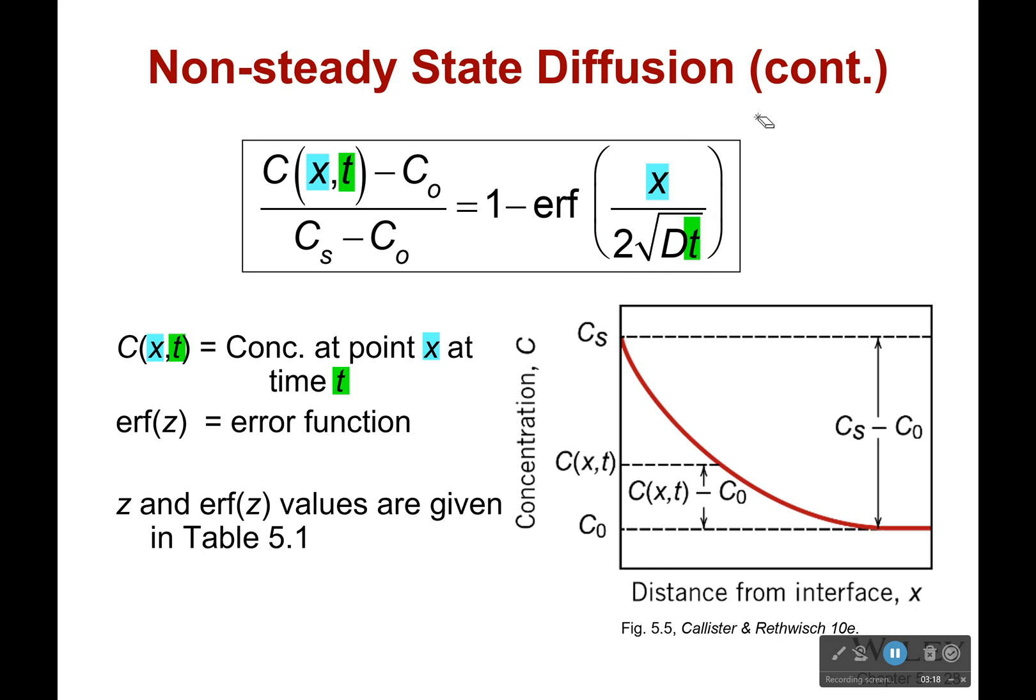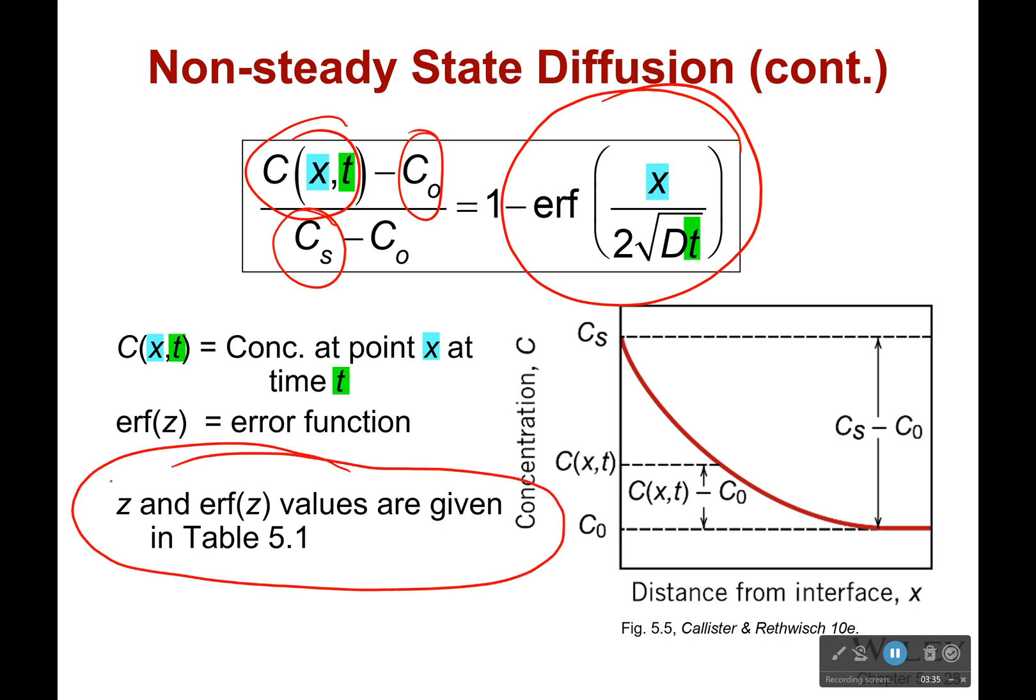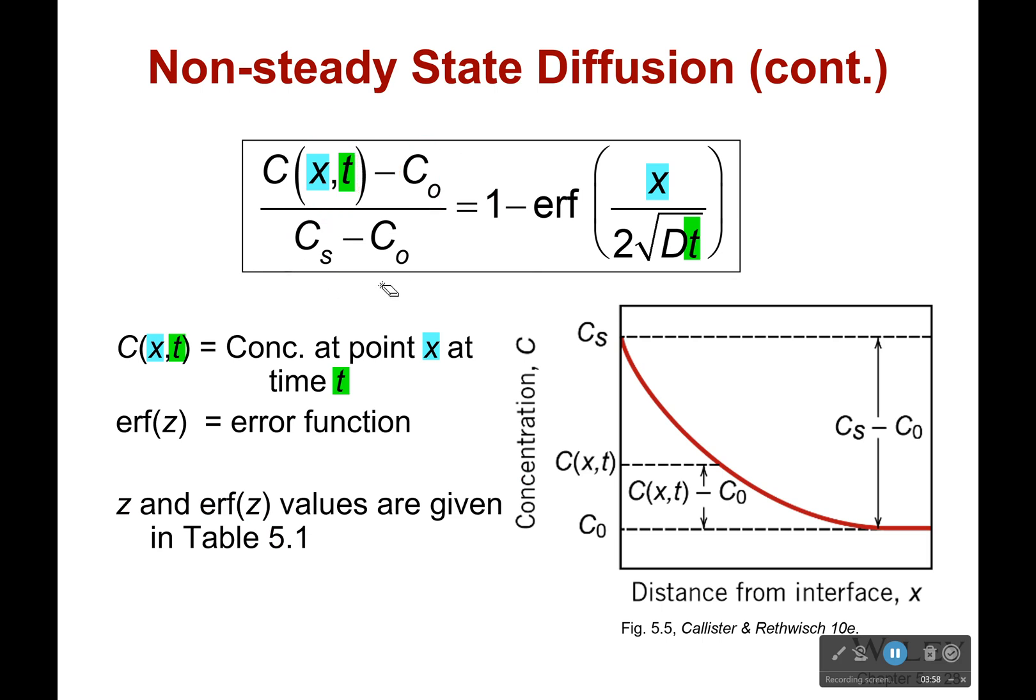Or you might be given the concentration at a particular point in time as well as the initial concentration and the surface concentration. In that case, you should be able to calculate what this whole value is irrespective of what's inside of it. And there are tables in your book, table 5.1, where it gives you values of z and the associated values of the error function. So based on what you know, whether you've calculated the error function, you can then get the value of z, or if you've calculated z, you can get the value of the error function. You can go back and forth.